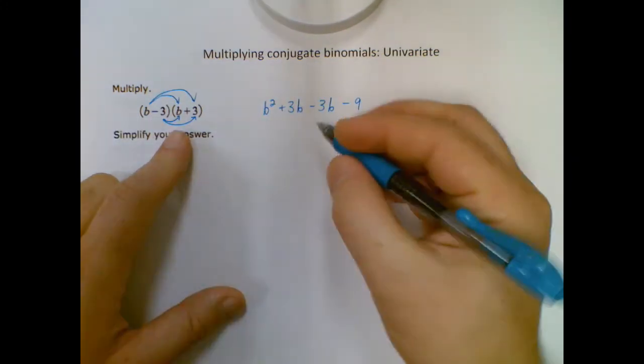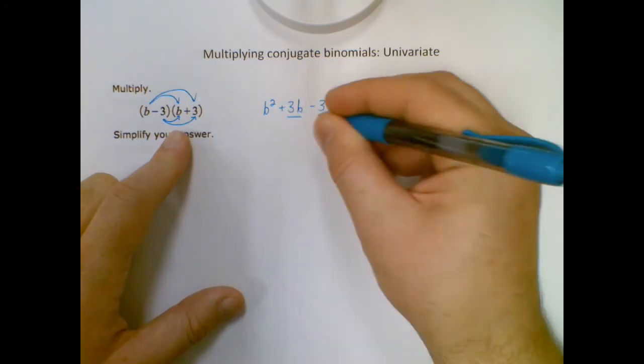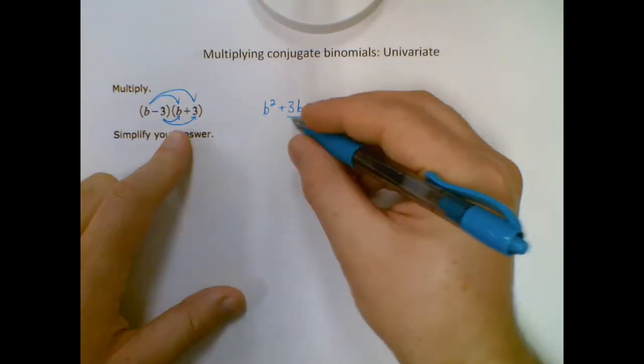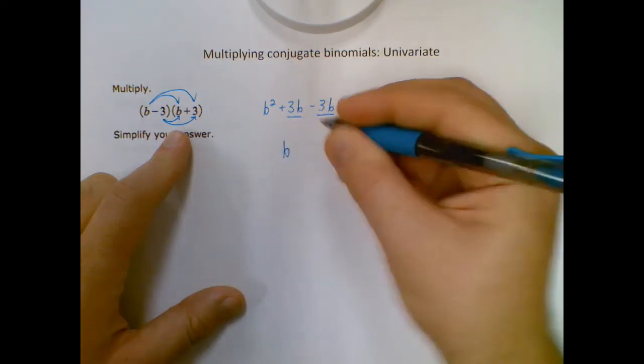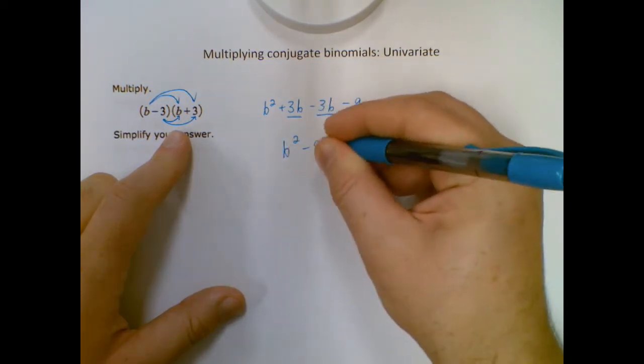I do want to combine like terms. I only have two, right? I have my two linear terms there. 3B and negative 3B drops out because they add up to zero. So I just have B squared minus 9.